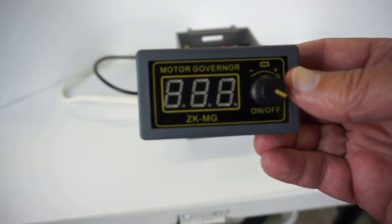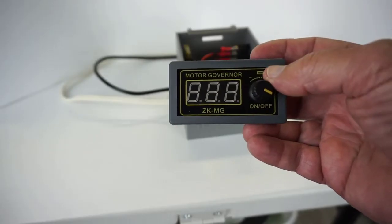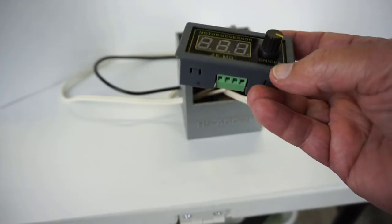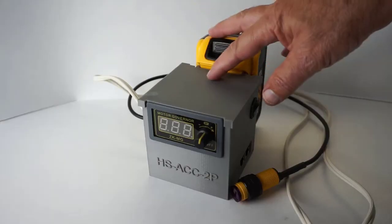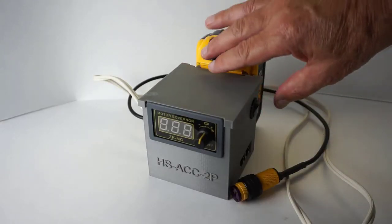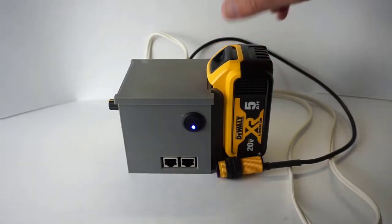I went with this ZK-MG motor controller. I like the price, and I like the rotary dial, and the easy input and output connections at the bottom. And here we have the control panel all bunded up. Dewalt powered.